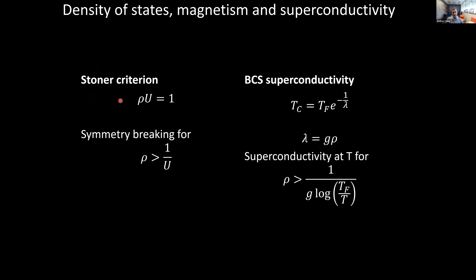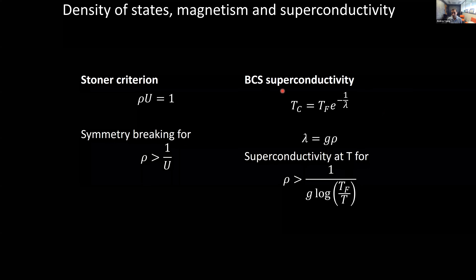For magnetism, from the Stoner criterion, there's a direct competition between bandwidth and the strength of Coulomb repulsion. When you have density of states that's sufficiently high — larger than the inverse repulsion — that's when you would expect to have symmetry breaking. And in a completely different context, BCS superconductivity.